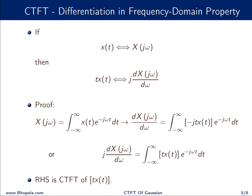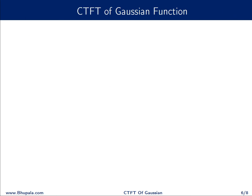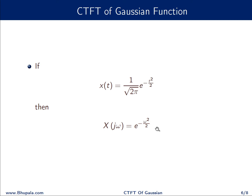We will now utilize these two properties to evaluate the Fourier transform of the Gaussian function. The Gaussian function is defined as x(t) = (1/√(2π)) e^(−t²/2), and its Fourier transform is X(jω) = e^(−ω²/2). By looking at this, we can see that the Gaussian has itself as the Fourier transform — if the signal is Gaussian in the time domain, it is also Gaussian in the Fourier domain.